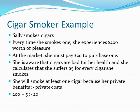To bring this home, I want to talk about cigar smoking, and this example is less silly than you might think. So Sally likes to smoke cigars. To be precise about the algebra, every time she smokes one, she gains $200 worth of pleasure. Cigars are not free — there are two costs to smoking a cigar. She has to pay $20 to purchase one, and she bears private health costs from smoking. She knows cigars are bad for her health, and she recognizes a private cost of $5 for every cigar she smokes.